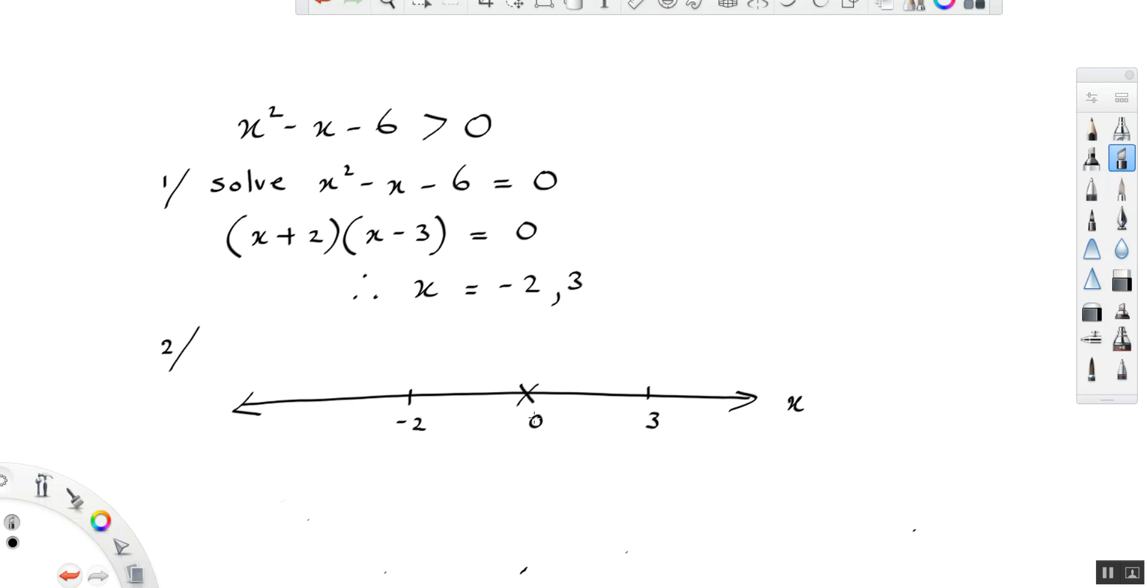So we get a value of minus 6, and that is clearly not greater than 0. So that tells us that this region in between 3 and minus 2, we are not going to get values that are greater than 0.